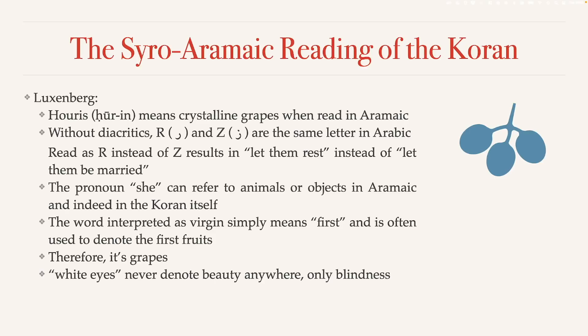White is only used as a metaphor for blindness. Even in the Quran that's how it's used — in Surah 12:84, Jacob's eyes turn white from all his crying, meaning he turns blind, not beautiful. That's also why translators and interpreters say 'beautiful dark eyes' in this verse, because it doesn't make sense to call them 'beautiful white eyes,' but the Quran clearly only says white. At this point it should be fairly clear that Luxenberg has a point and is likely correct.